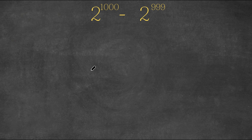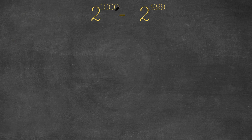Hey guys, welcome back to Click Academics. In today's video, I'm going to be teaching you guys how to solve this exponential problem. So we have 2 to the power of 1000 minus 2 to the power of 999.